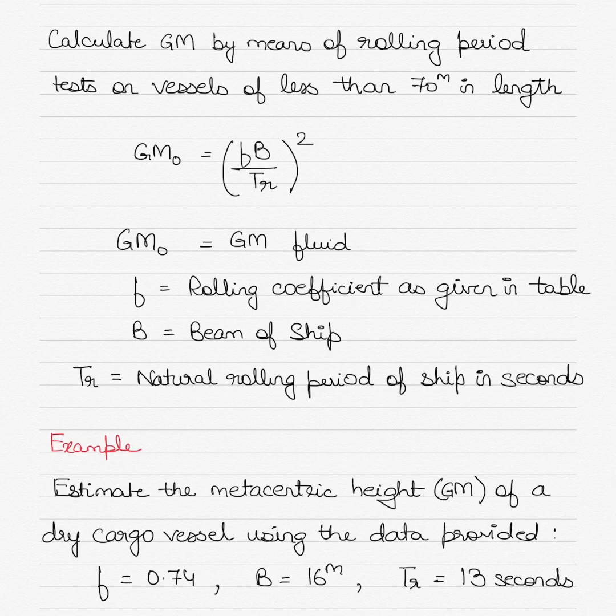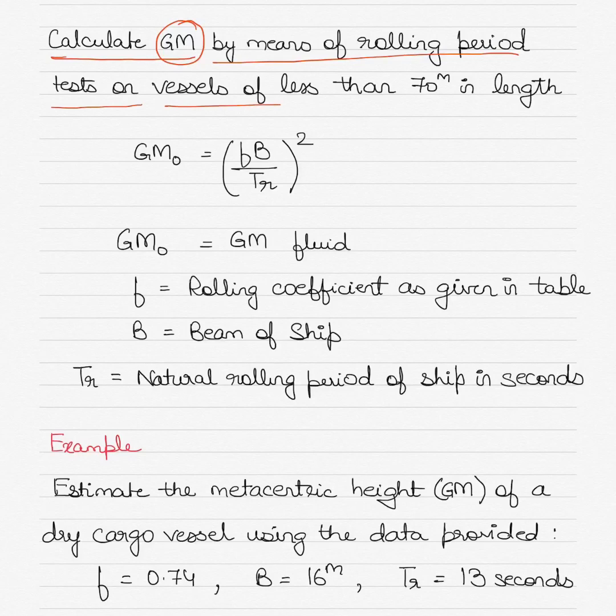Today I'll show you how a numerical example is worked out if you get a similar question in the exam. Topic for today's video is: calculate the GM or the metacentric height of a vessel by means of rolling period test carried out on vessels of less than 70 meters in length.